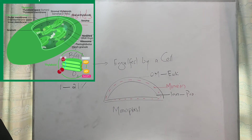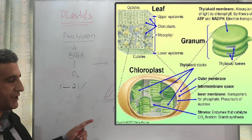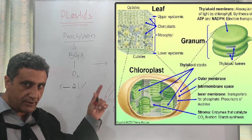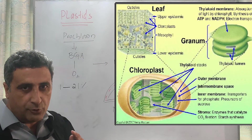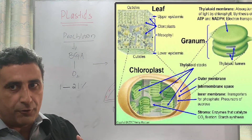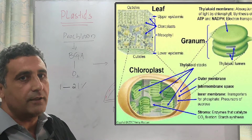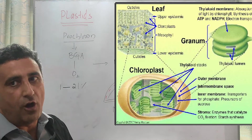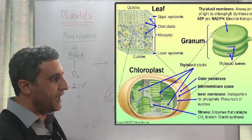That was the first plastid. These are membrane-bounded organelles concerned with the synthesis of glucose, concerned with photosynthesis. And as a by-product, they produce oxygen which we inhale.